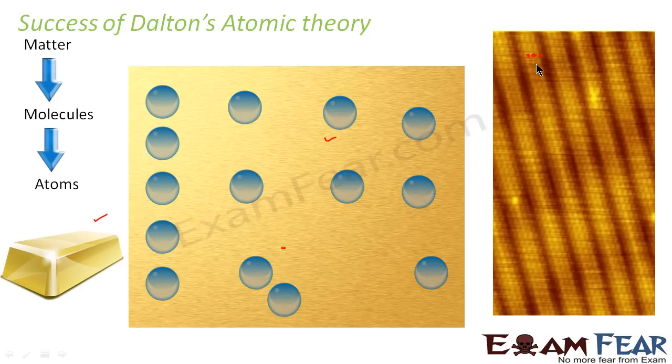These days we can prove or the Dalton's atomic theory can be proved by itself because now we have instruments which can actually view the atoms which constitute an object. Finally this Dalton's atomic theory was accepted by everybody and now it formed the basis of so many other higher studies.